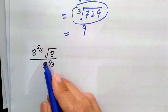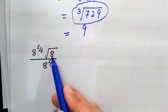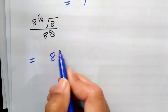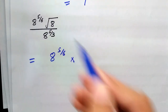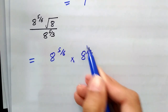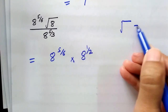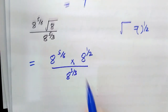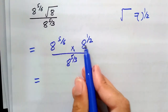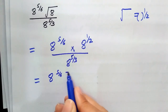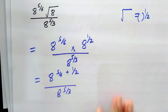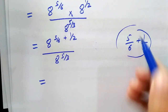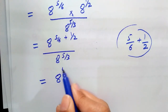Now for the expression 8 raised to power 5/6 multiplied by the square root of 8, divided by 8 raised to power 5/3. We rewrite the square root of 8 as 8 raised to power 1/2. Since the bases are the same, we combine the powers in the numerator: 5/6 plus 1/2. Solving this gives 4/3, with denominator 8 raised to power 5/3.